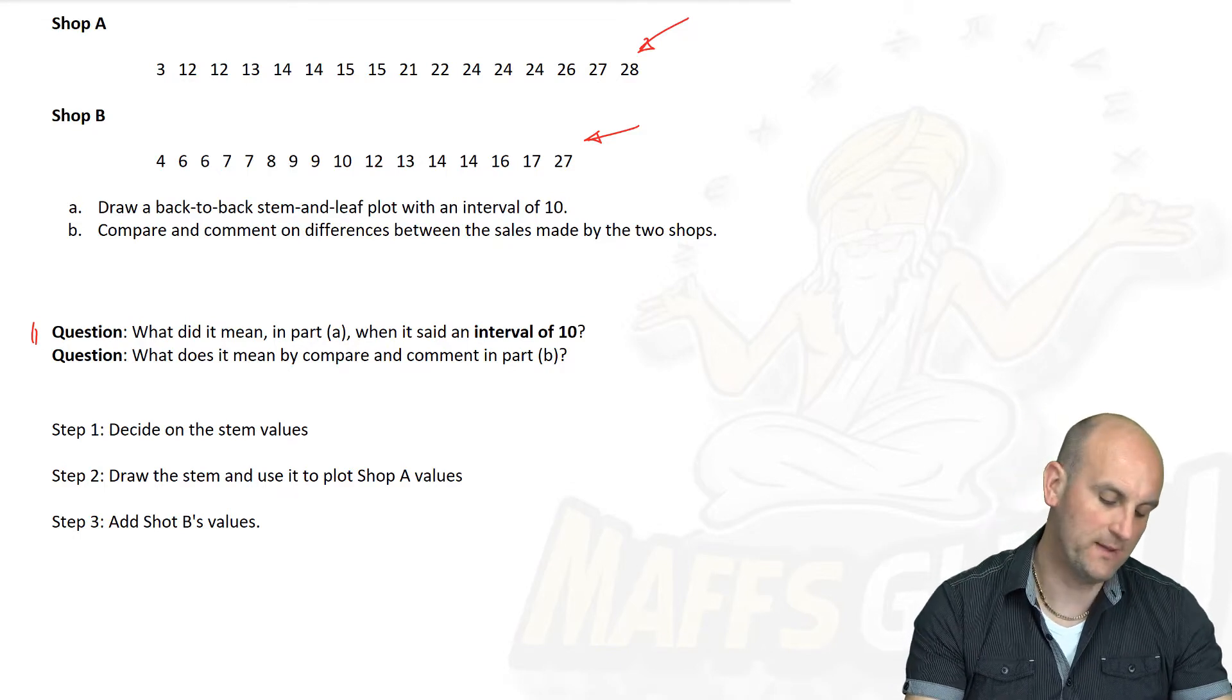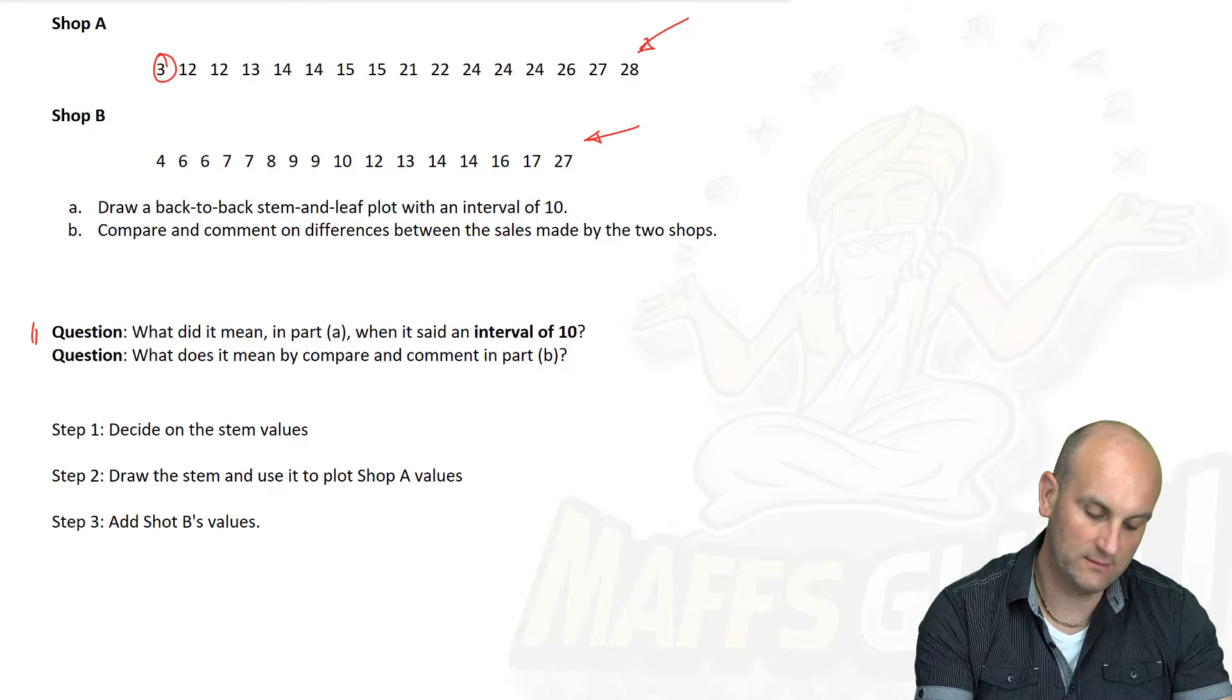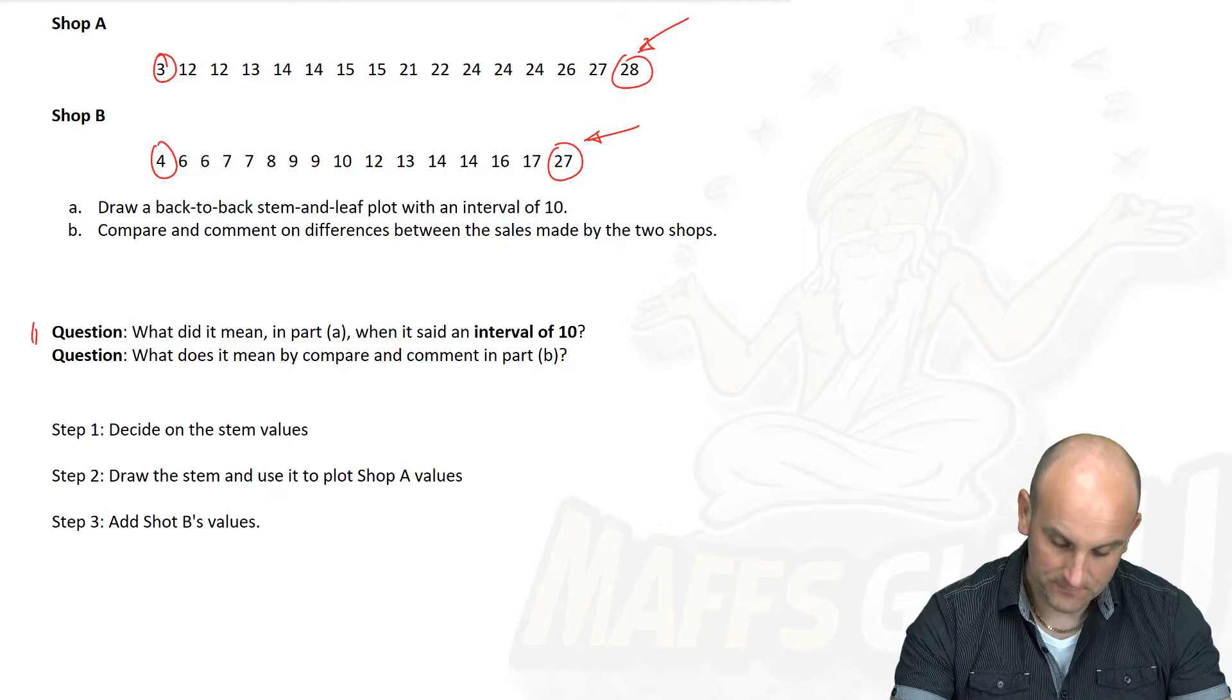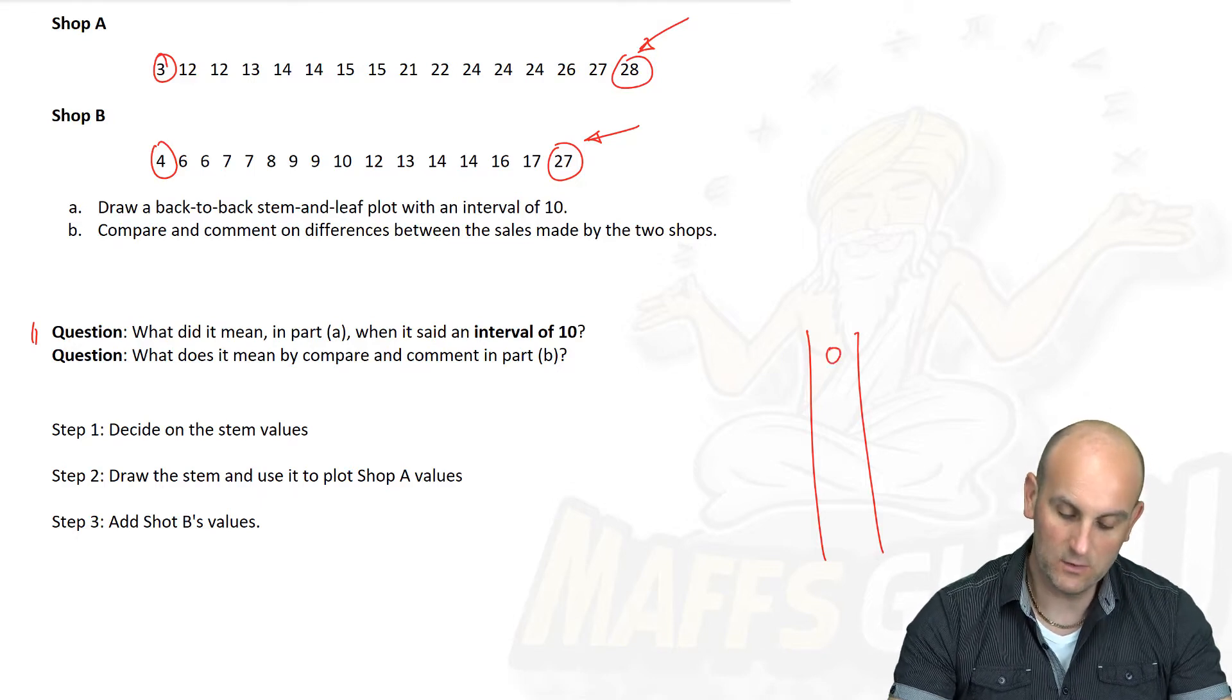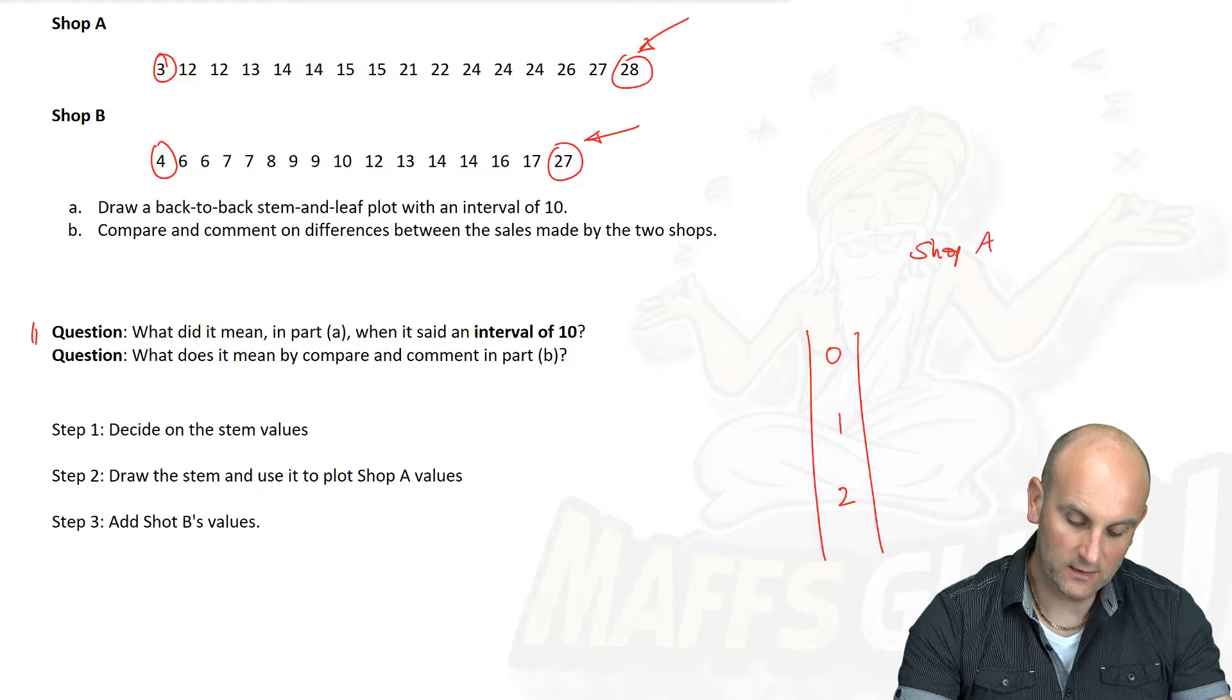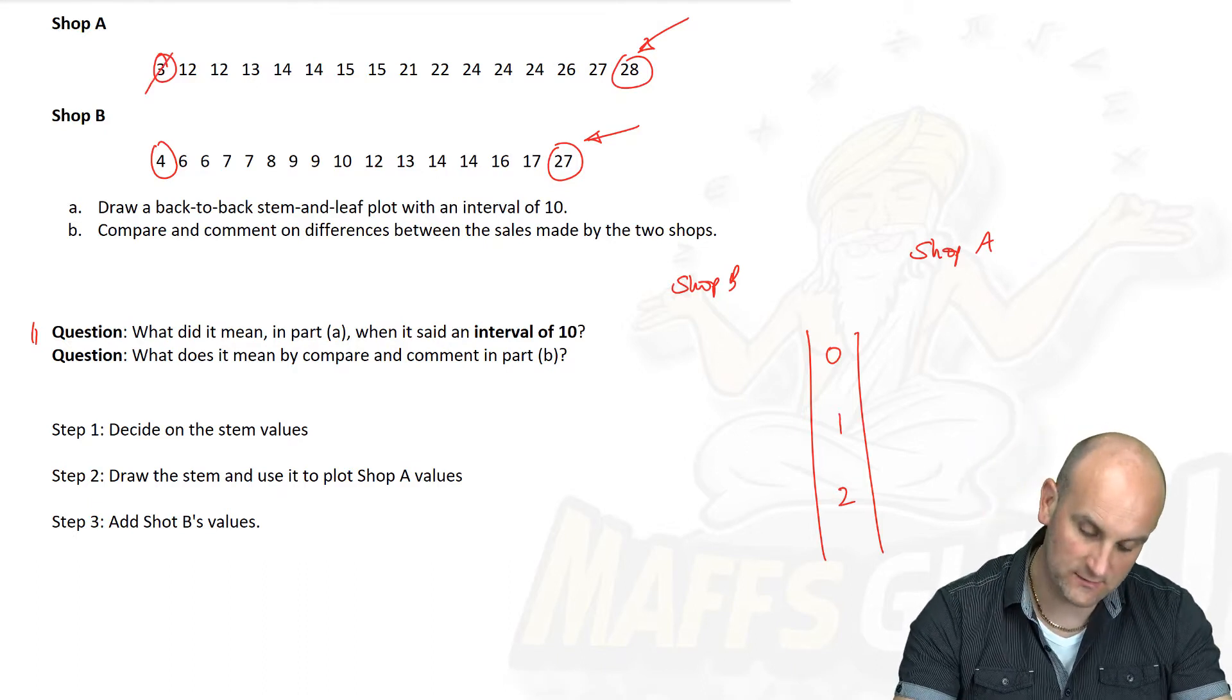It's just a way of helping us split up our data. First things first, I'm going to draw my back-to-back stem and leaf diagram. My lowest number in shop A is 3. My highest number is 28. My lowest number in shop B is 4, highest is 27. I'm going to draw a double line, and the numbers are just 0, 1, and 2. I'm going to put shop A on this side and shop B on this side. Same process as we did before. Shop A has 3, so there's 3.